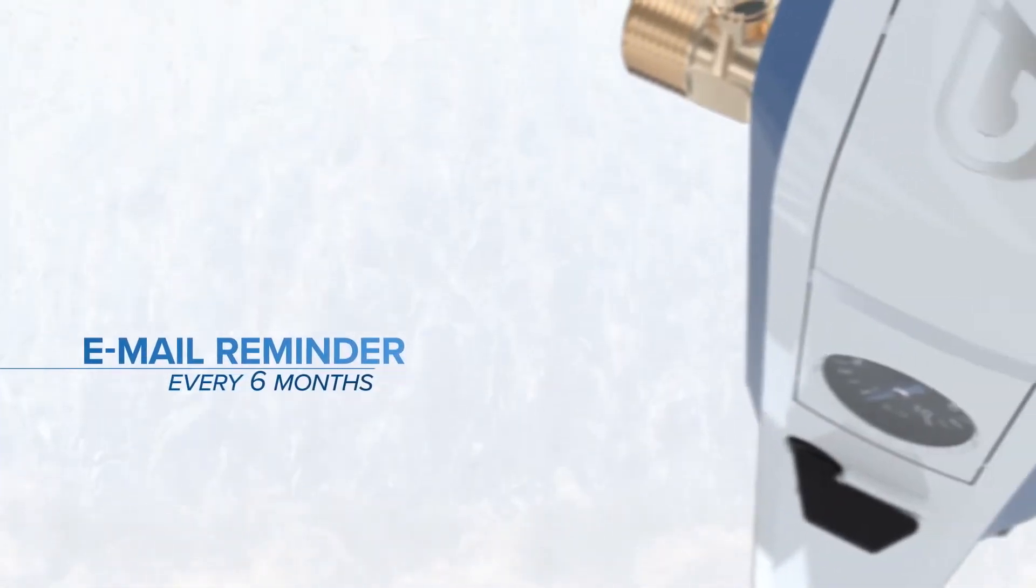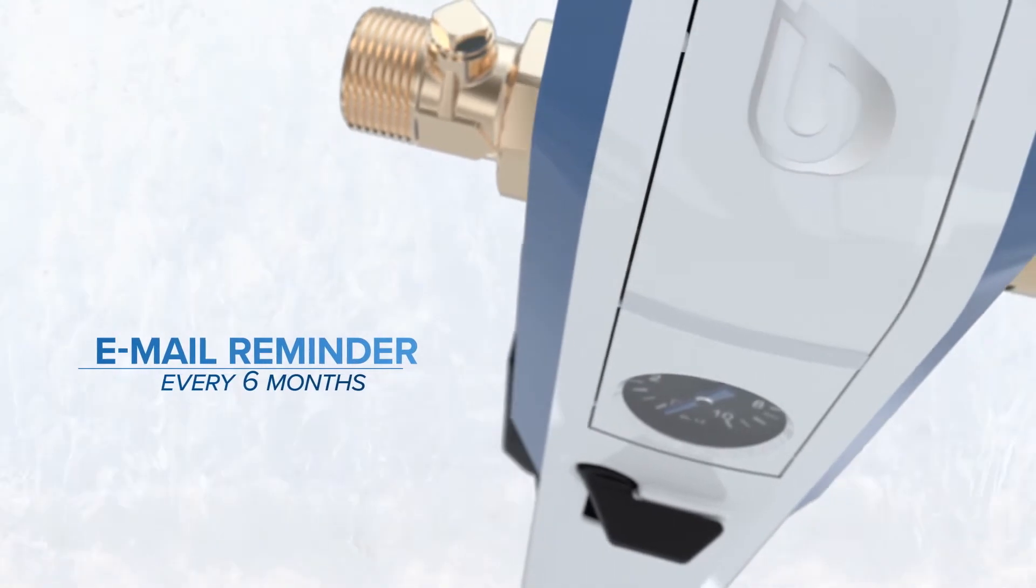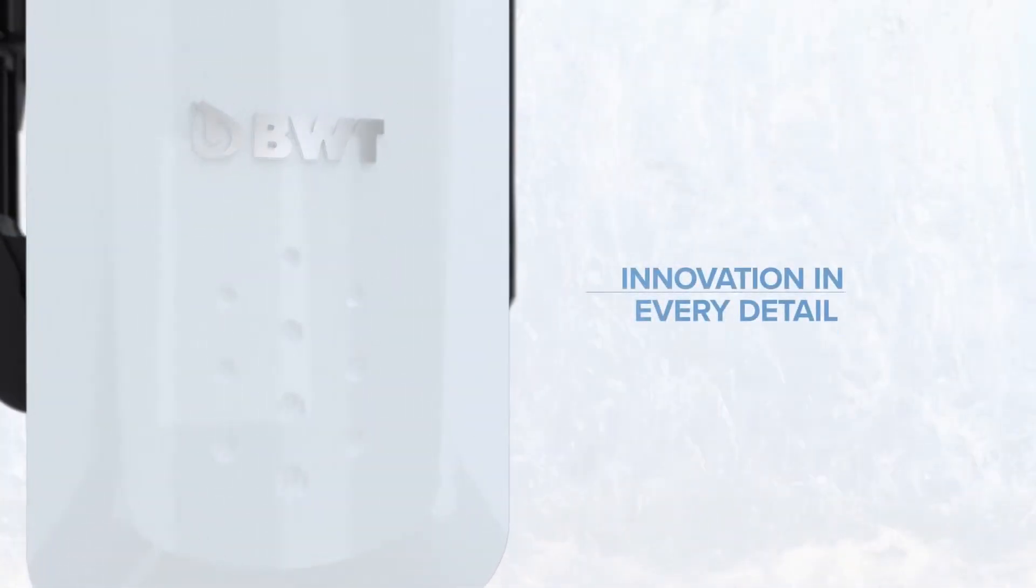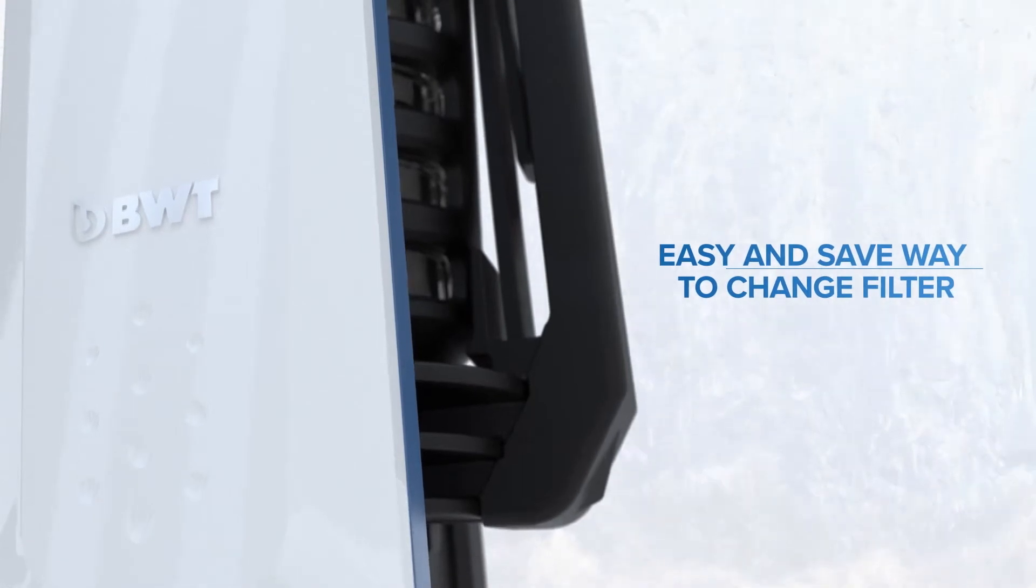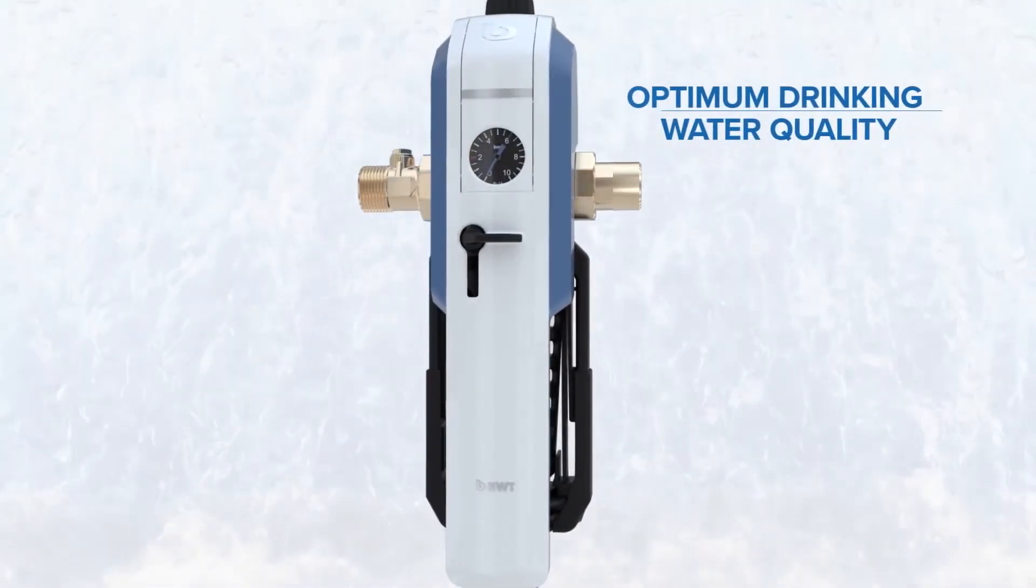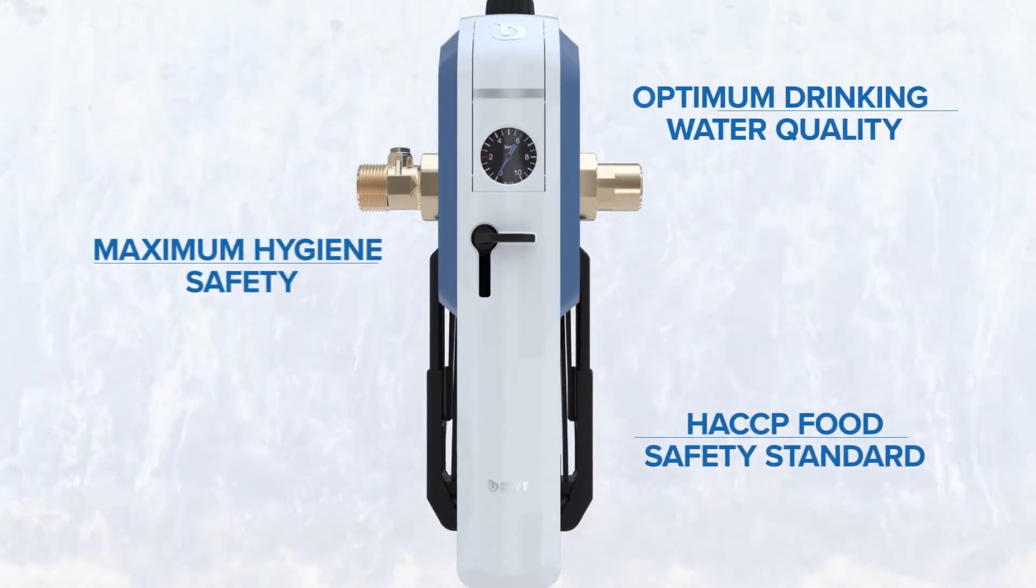And with an email reminder, forgetting filter changes is a thing of the past. The E1 Hygiene Vault is designed with innovation in every detail. It is engineered to deliver the easiest and safest way to change a particle filter. The E1 Hygiene Vault ensures optimal drinking water quality and maximum hygiene safety.